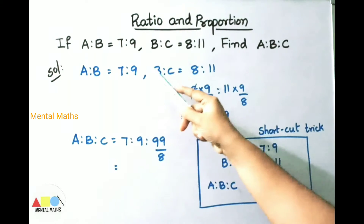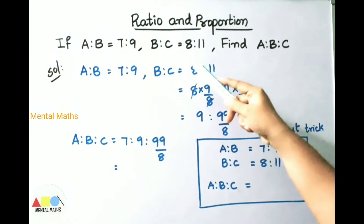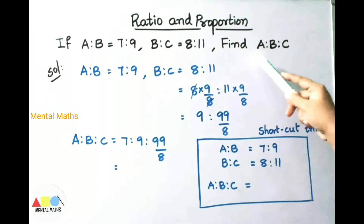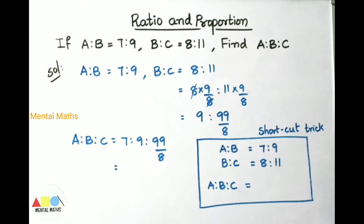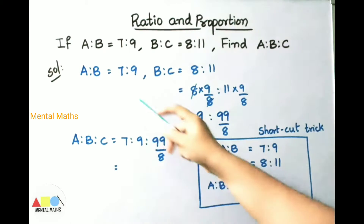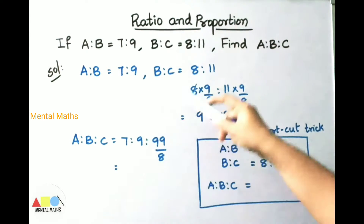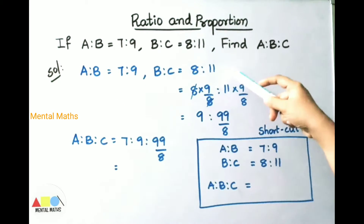If A is to B is 7 is to 9, and B is to C is 8 is to 11, find A is to B is to C. Today I am going to show you two methods to solve this sum. So first let us see the first method. Given A is to B is 7 is to 9, B is to C is 8 is to 11.